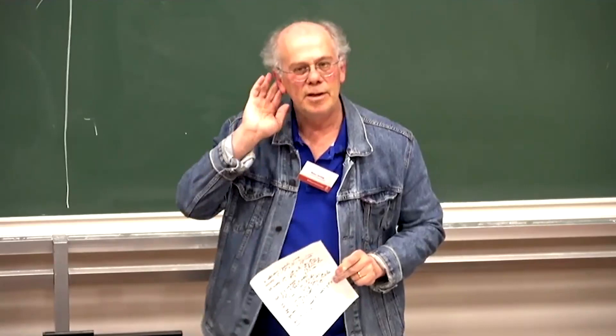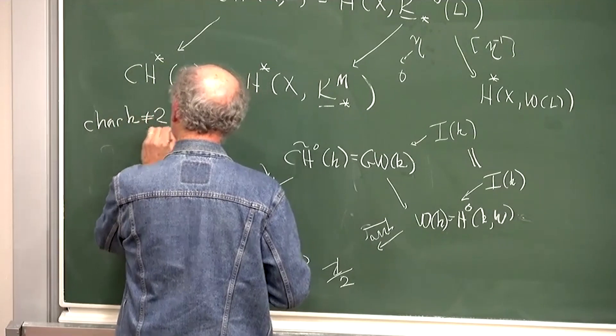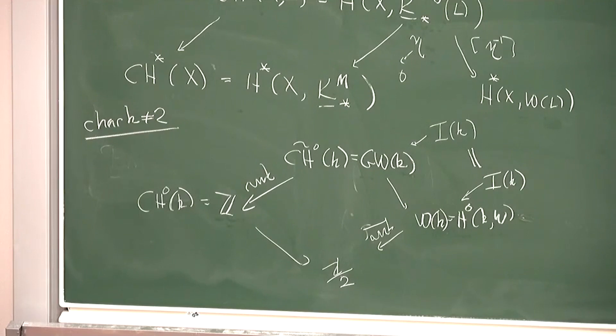Characteristic two is something I want to avoid at all costs — characteristic of k not equal to two. We will have no more discussion of characteristic two.